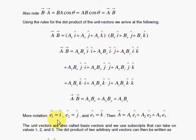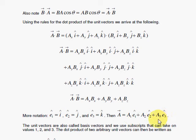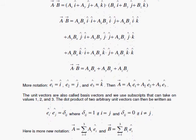Another notation is to use the e-hat notation, where e-sub-1 is i-hat, e-sub-2 is j-hat, and e-sub-3 is k-hat, to represent the x, y, and z directions. We simply call them 1, 2, and 3 for the directions. The vector can be written with i-hat, j-hat, and k-hat replaced by the e's, and the subscripts 1, 2, and 3 used instead of x, y, and z.